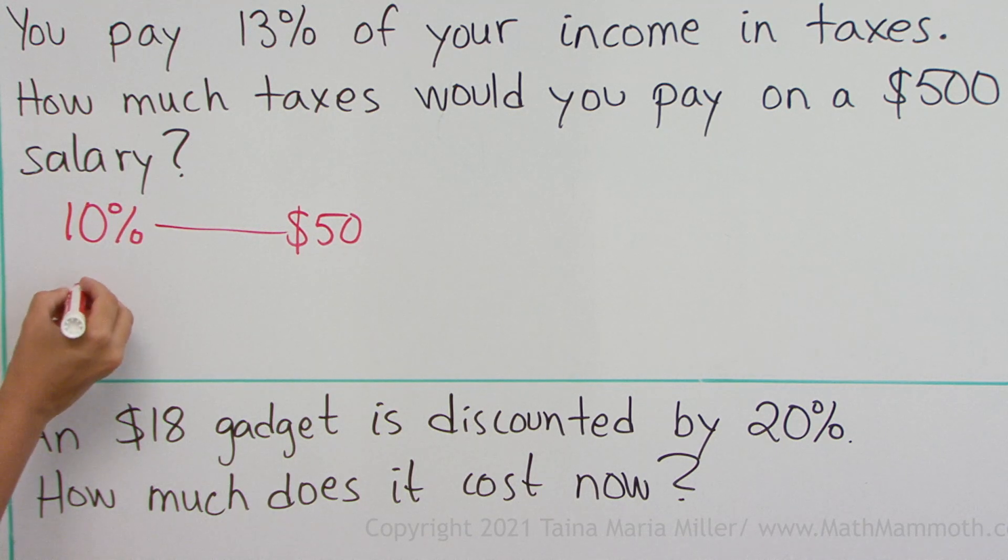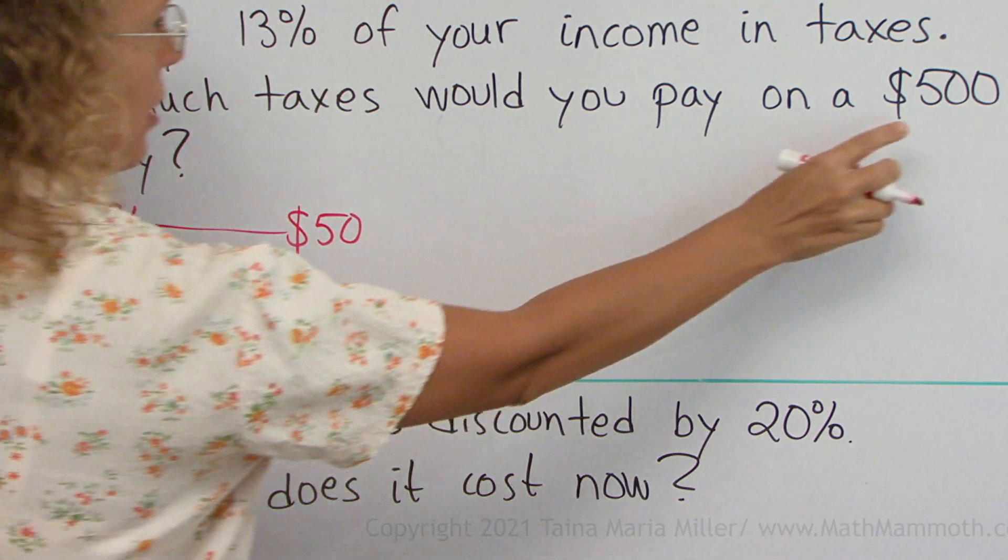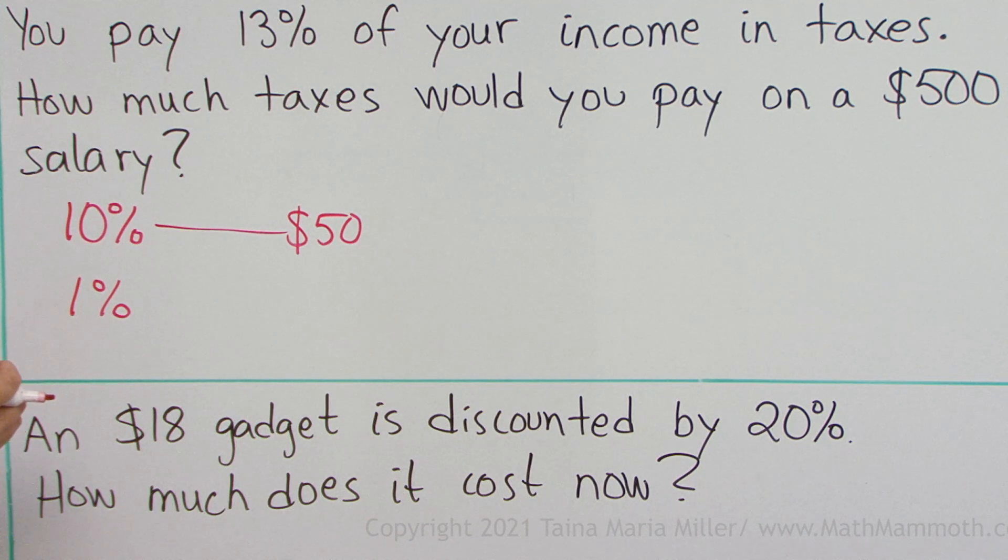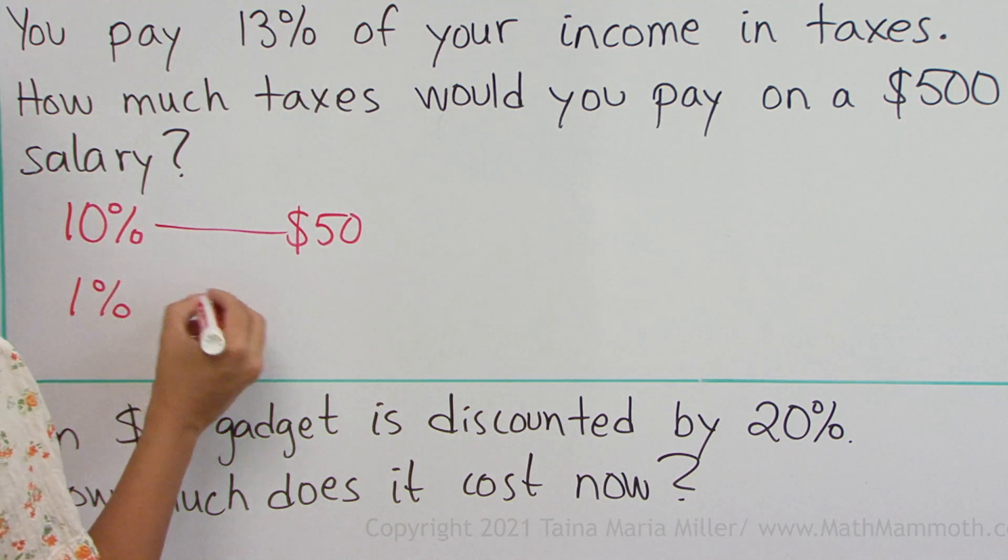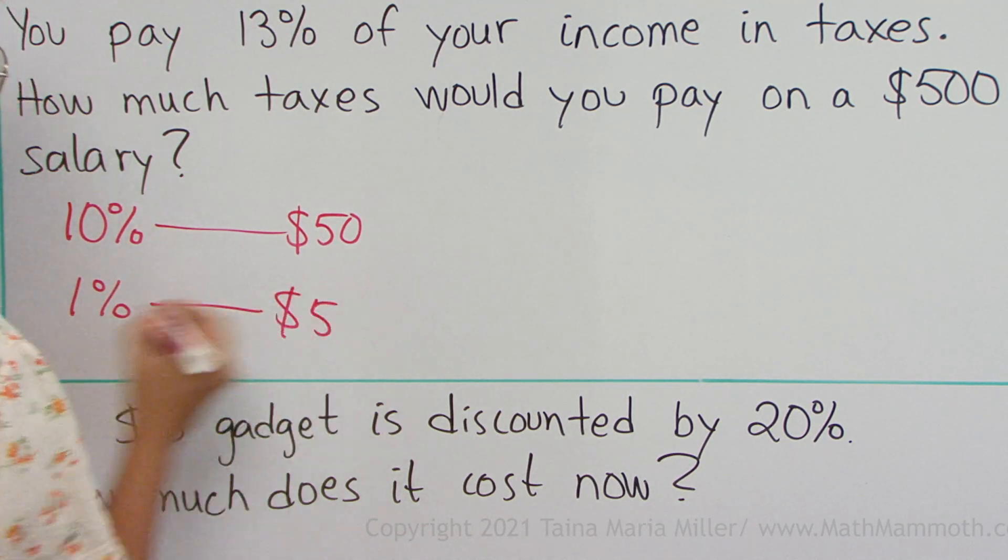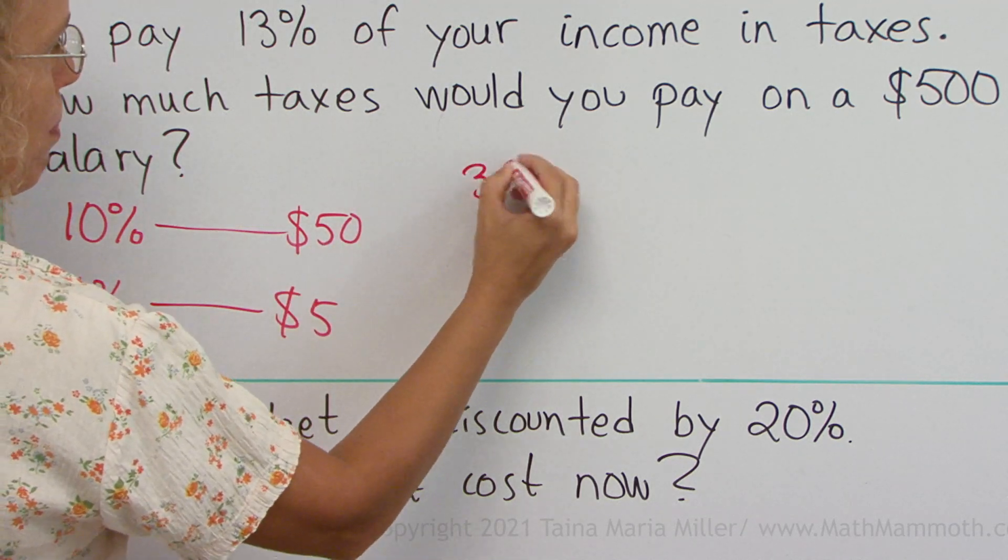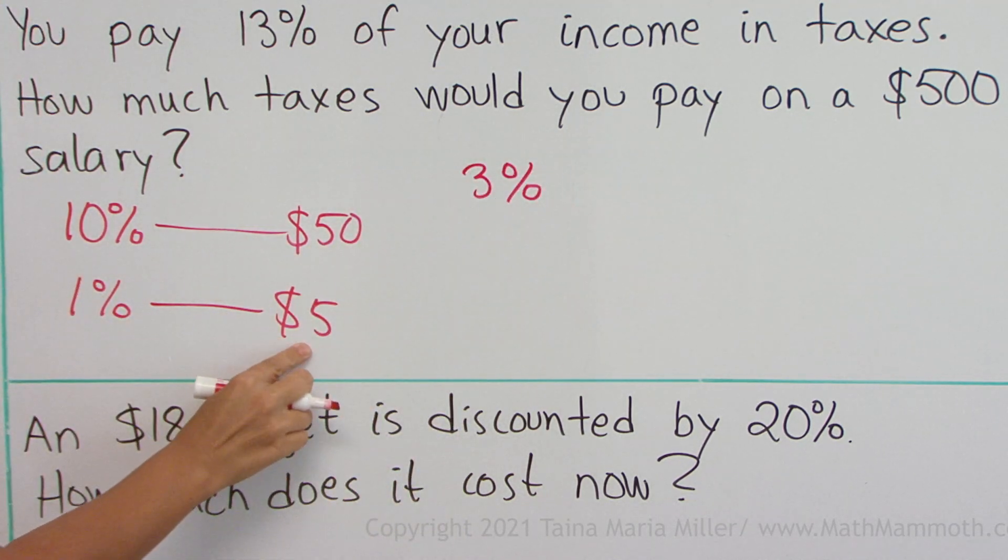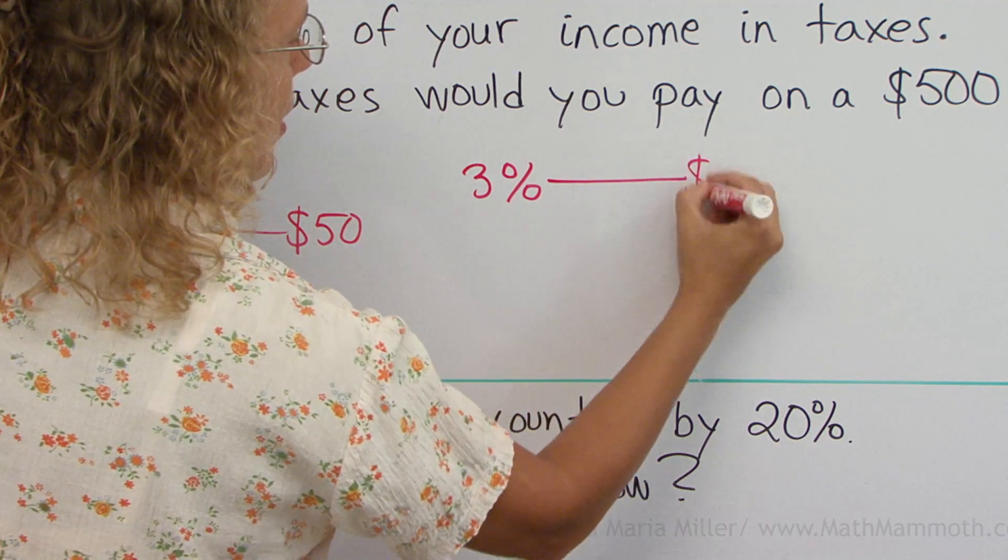We can surely find out also 1% of $500, that's the 100th part of it, so that would be $5. And now, see it's easy, 3% of it would be 3 times that, it would be $15.